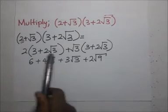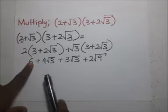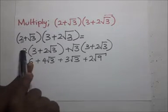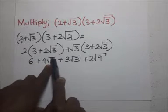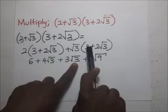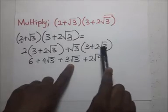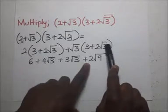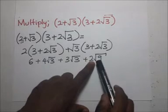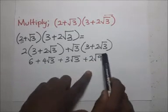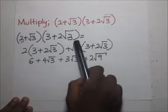You should take these surds as x. If this was algebra, it would just be like 2 times 3 is 6, then 2 times 2x gives us 4x, then 3 times x which is 3x, then x times 2x which gives us 2x squared. So in other words, the √3 is the unknown x that I'm treating here.